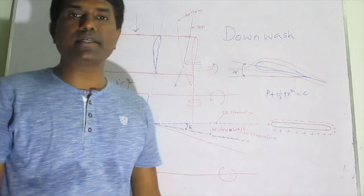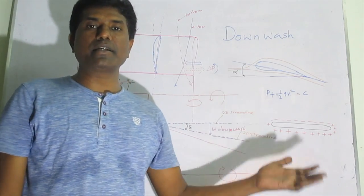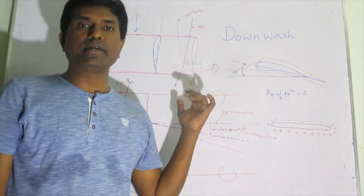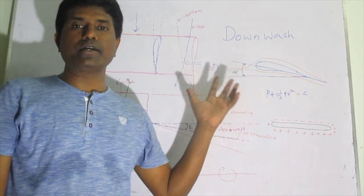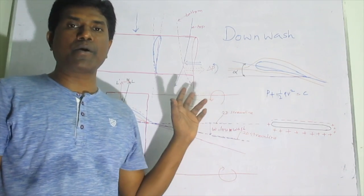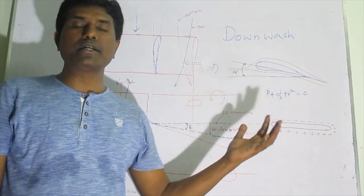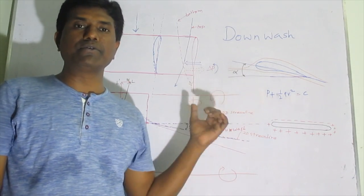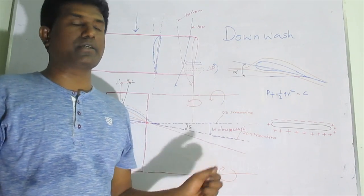Dear friends, in this class let us see about downwash. Downwash is an important phenomenon in aerodynamics, especially in the case of 3D wings. We will see how downwash is created, how it is responsible for creating induced drag, and how downwash can be minimized in order to reduce induced drag. We will see these things one by one in this lecture.